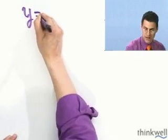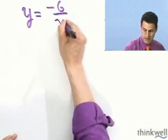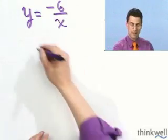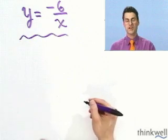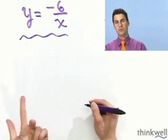So suppose I'm given the function f of x, and I'll write it as y equals minus 6 over x. What would the inverse be? I just flip the roles. I take every x, make it a y. Take every y, make it an x.